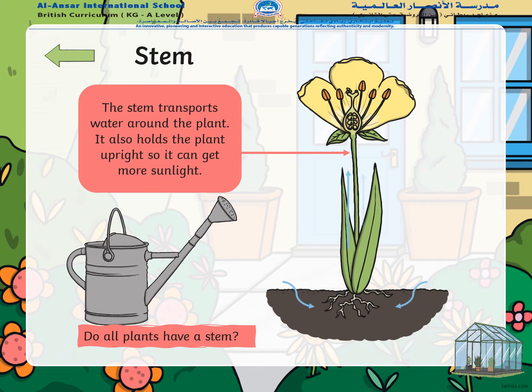Stem is a part of a plant that helps it stand upright and straight. The stem transports water from the roots, and from the stem it passes on to different parts of the plant. Do all plants have a stem? There are different types of plants — Google it, you can talk about it in the next class, and have some research done on it.